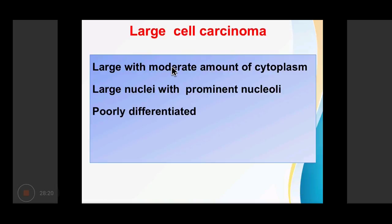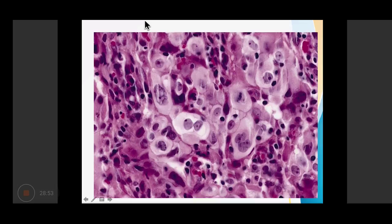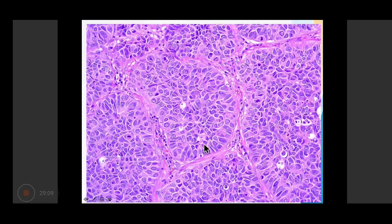Large cell carcinomas have large tumour cells with moderate cytoplasm, a large nucleus with prominent nucleoli. These cells are mostly poorly differentiated and do not show characteristic features of either squamous cell carcinoma or adenocarcinoma. They show some neuroendocrine differentiation features such as nesting pattern and rosette formation, and are positive for synaptophysin and chromogranin.